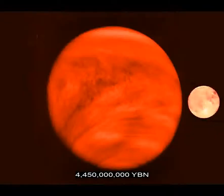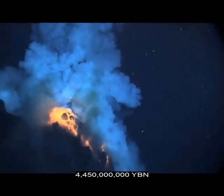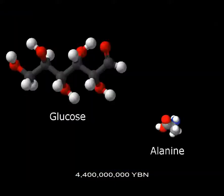Planet Earth cools. Molten liquid rock turns into a solid crust. Water condenses and falls to the surface, filling the lowest parts of the land to make the first Earth oceans, lakes, and rivers. Larger molecules form on Earth, like amino acids, phosphates, and sugars — the components of living objects.